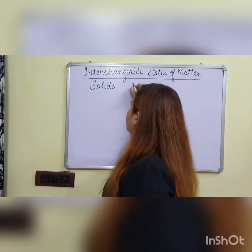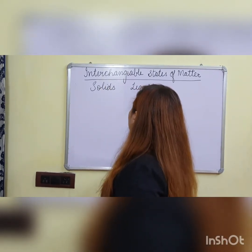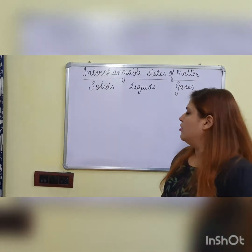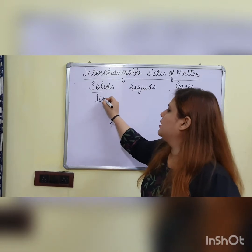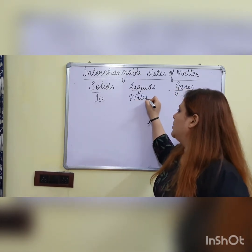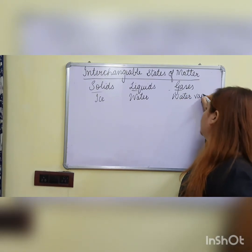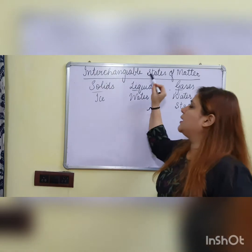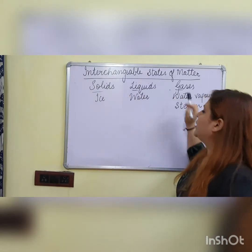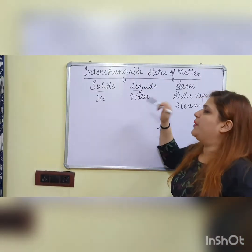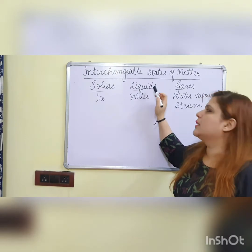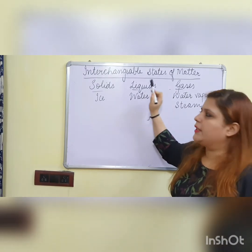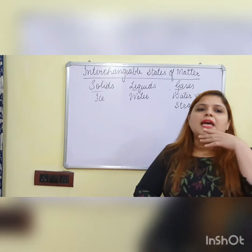There are three states of matter: solid, liquid, and gases. We will take the example of ice, water, and water vapor — also called steam — to explain all this. This topic tells us that these states of matter can be changed from one type to another. Solids can be changed into liquids, liquids into gases, gases into liquids, and liquids into solids.